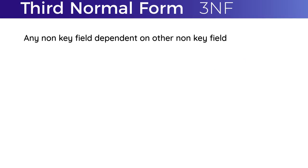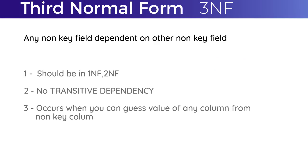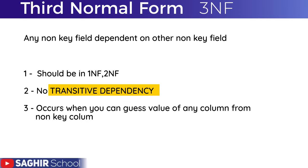For a table to be in Third Normal Form, it must already be in First Normal Form and Second Normal Form. Third Normal Form should not have a transitive dependency. One more thing to note is that if one non-key column can be guessed from another non-key column, that means it is violating Third Normal Form's rule, and we'll break the table.